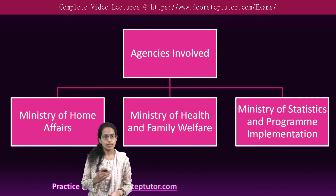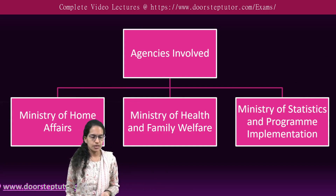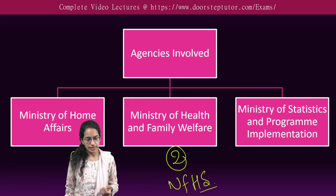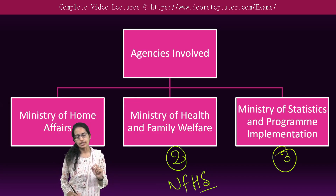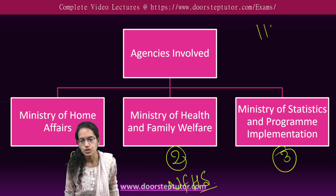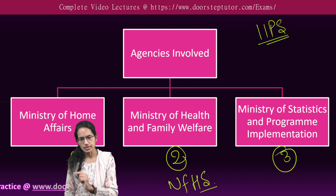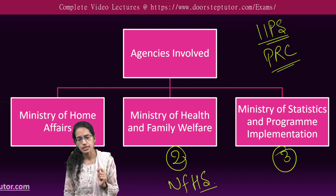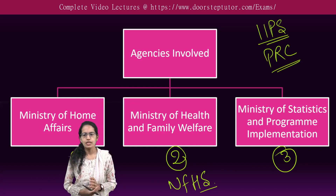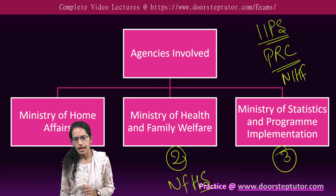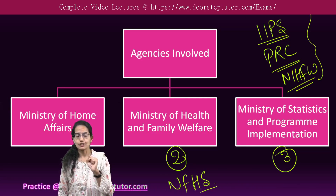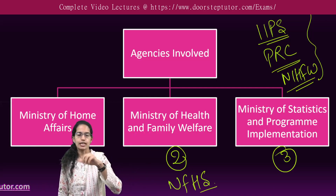Three primary agencies are involved with surveys in India. One is the Ministry of Home Affairs; the second is the Ministry of Health and Family Welfare, which conducts the National Family and Health Survey; and the third is the Ministry of Statistics and Program Implementation. Besides these ministries, there are national institutions like the Indian Institute of Population Studies in Mumbai, various population research centers across 14 universities, and the National Institute of Health and Family Welfare — all engaged in collecting data.